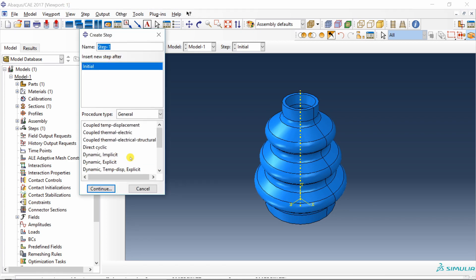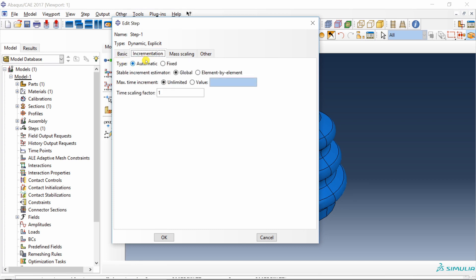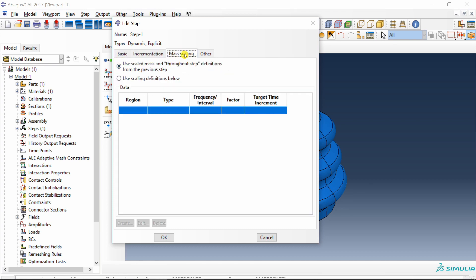Next is go to step. Create a step. Now over here you have to scroll up and select dynamic explicit. Say continue. Here you have to give time period as 0.01. By default nonlinear geometry will be on. Keep it on. You don't have to change anything over here. This mass scaling is also interesting topic, but I will cover it in separate video. Say okay.